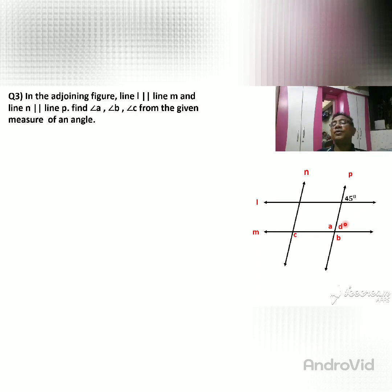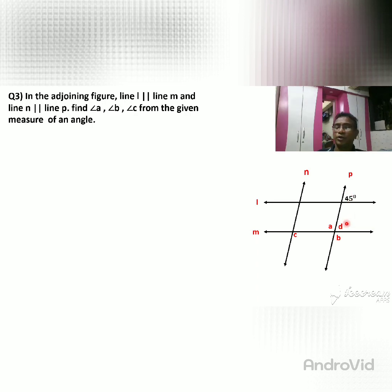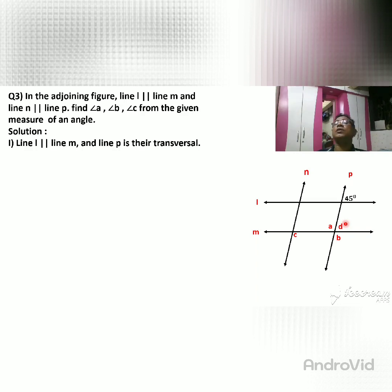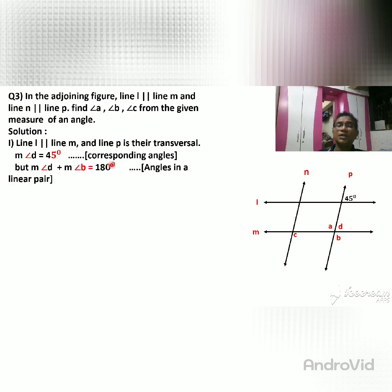The given angle is 45°. Lines L and M are parallel, with P as the transversal, so the corresponding angle D equals 45°. Therefore, major angle D = 45° by corresponding angles.